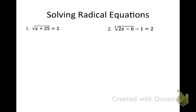On this first one we have the square root of x plus 25 equals 2. I need to get rid of the square root. So since it's the second root, I can raise this to the power of 2. The power of 2 and the square root are going to cancel each other out because they are inverse operations and I'm left with just x plus 25.